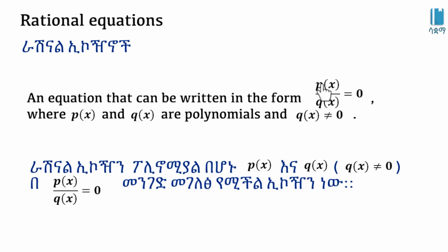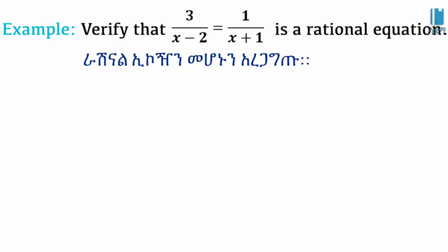For example, 3 over x minus 2 equal to 1 over x plus 1. This is a rational equation. We will solve: 3 over x minus 2 equal to 1 over x plus 1.